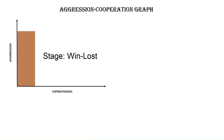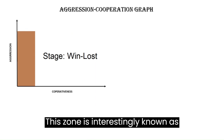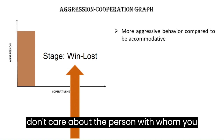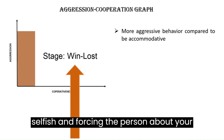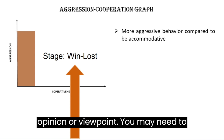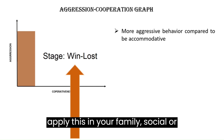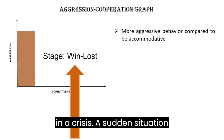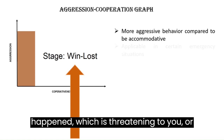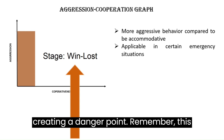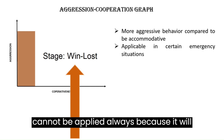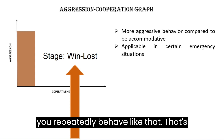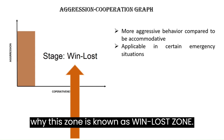Third, here you are much more aggressive rather than cooperative. This zone is interestingly known as the win-lose zone. Here, you don't care about the person with whom you are dealing. Rather, you are being selfish and forcing your opinion or viewpoint on the person. You may need to apply this in your family, social, or professional life, but only for a few cases — only when you are in a crisis or a sudden situation that is threatening or creating danger for you. Remember, this cannot be applied always, because it will help you win the immediate situation, but you are going to lose if you repeatedly behave like that. That's why this zone is known as the win-lose zone.